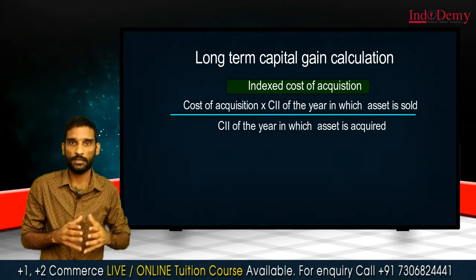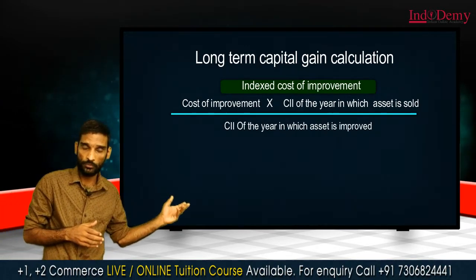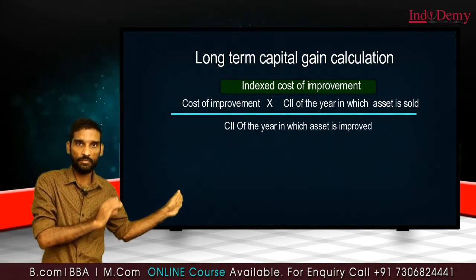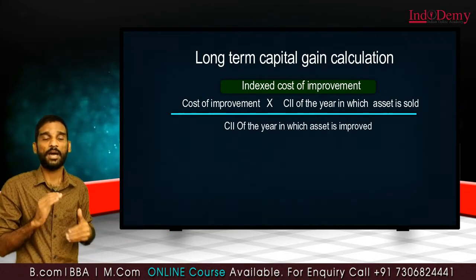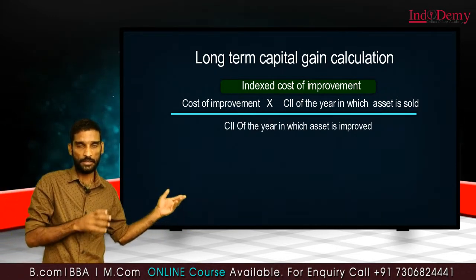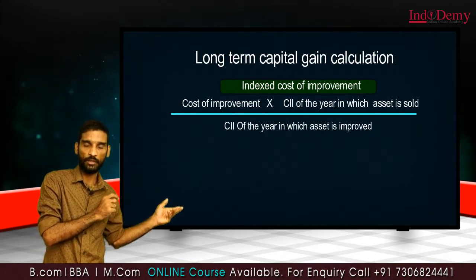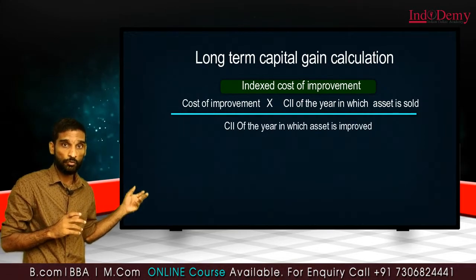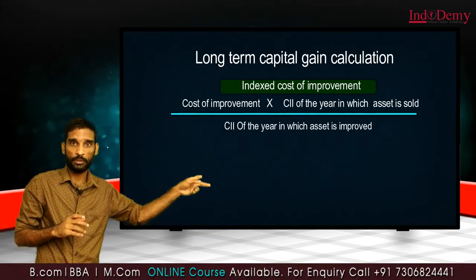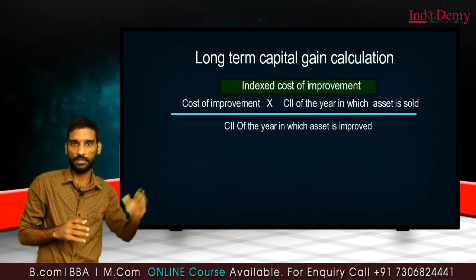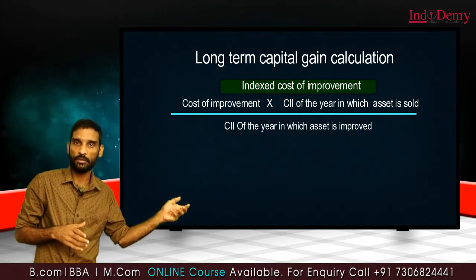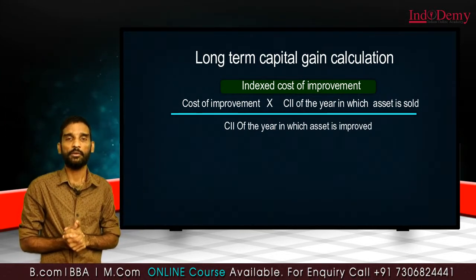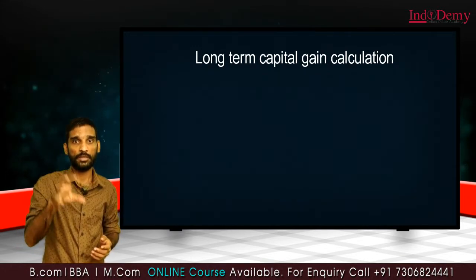For the indexed cost of improvement, the equation is: cost of improvement multiplied by CII of the year in which the asset is sold, divided by CII of the year in which the asset is improved. This is the complete equation for calculating long-term capital gain.